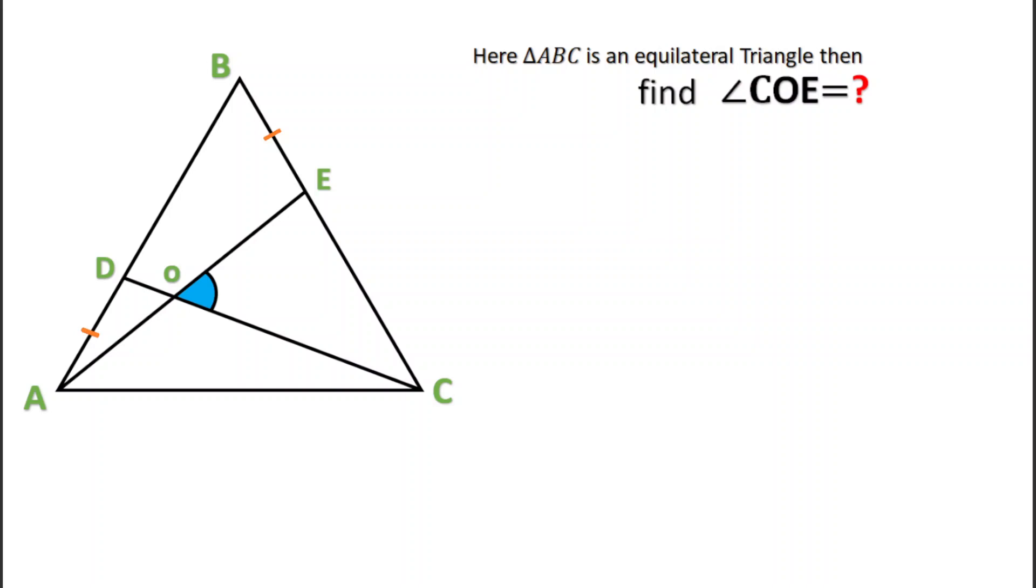Hello everyone, in this question there is an equilateral triangle ABC and AD segment is equal to BE segment. We have to find this blue angle, that is angle COE. You can try this to find the blue angle, otherwise watch the solution continuously.